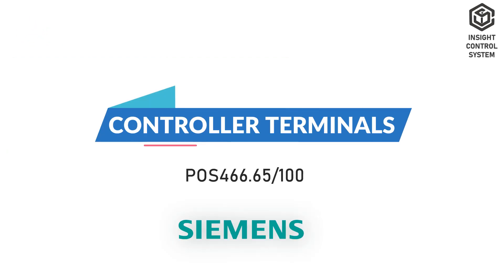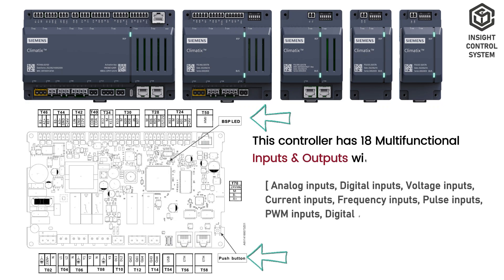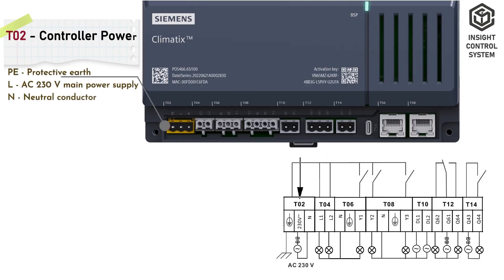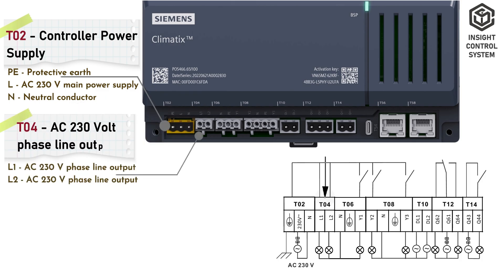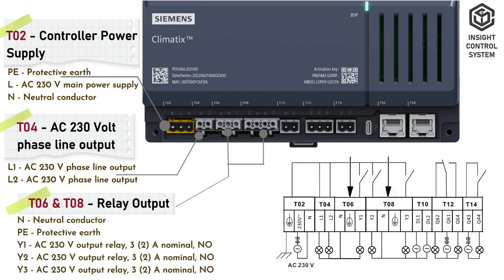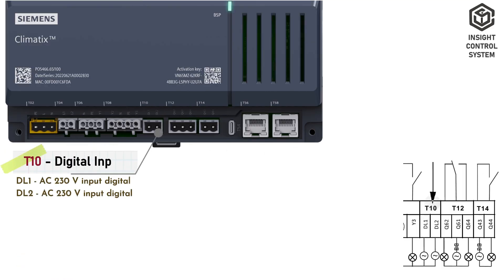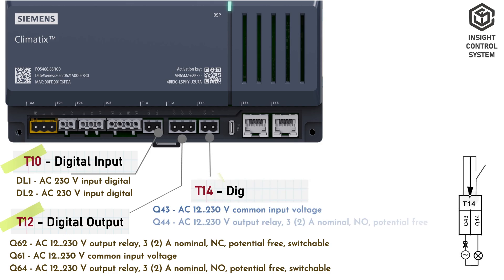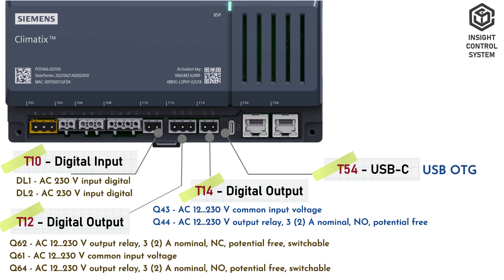Controller Terminals: This controller has 18 multifunctional inputs and outputs with various signal types. Terminal T2 is the controller power supply. Terminal T4 is AC 230 volt phase line output. Terminal T6 and T8 are relay outputs. Terminal T10 is digital input. Terminal T12 is digital relay output for potential-free relays and switchable.